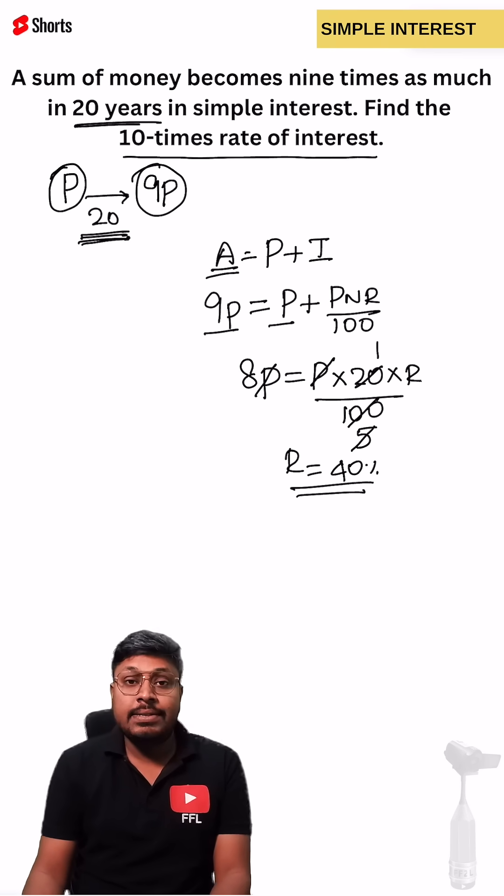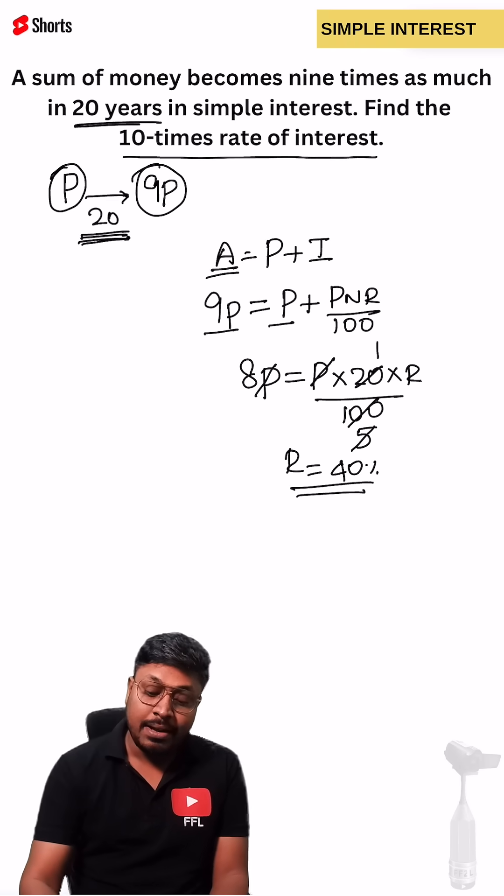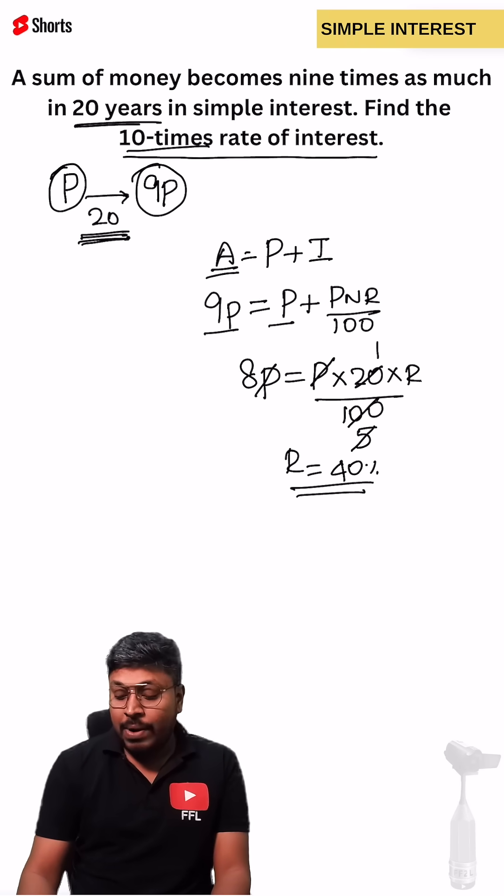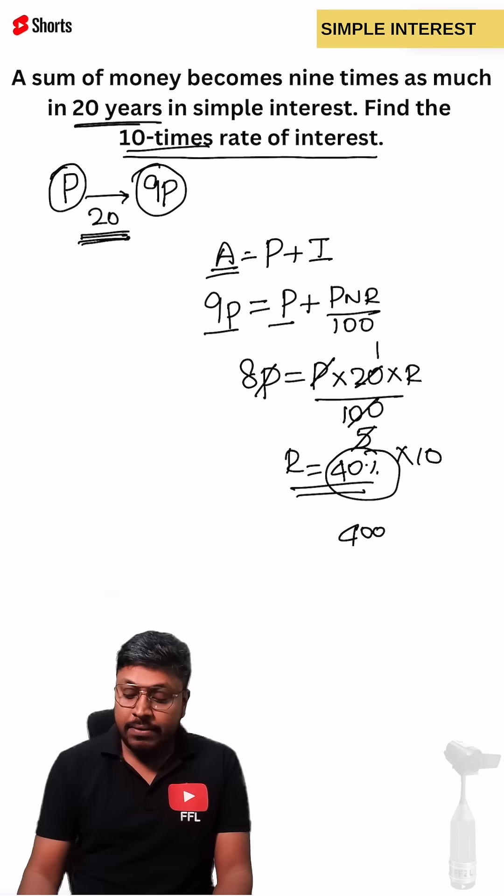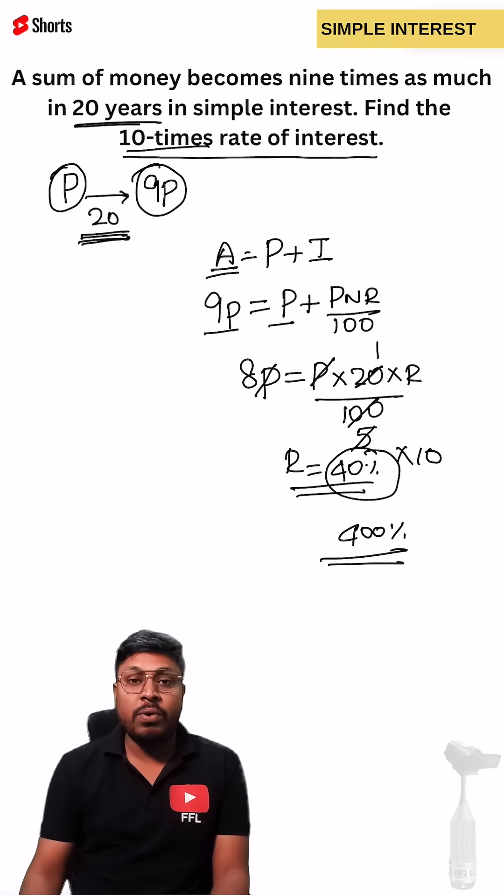But this is not the final answer. Why? Because our target is to find what is 10 times the rate of interest. So here 1 times the rate of interest is 40. 10 times the rate of interest will be 400 percentage. Answer for this question is 400 percentage.